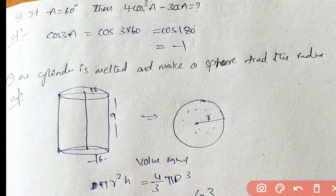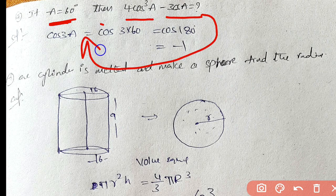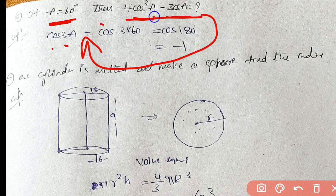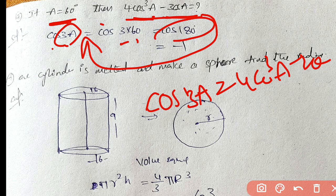If A equals 60 degrees, then find 4 cos cube A minus 3 cos A. This is the direct formula for cos 3A. cos 3A equals 4 cos cube A minus 3 cos A. Substituting A equals 60 degrees, cos 180 equals minus 1.